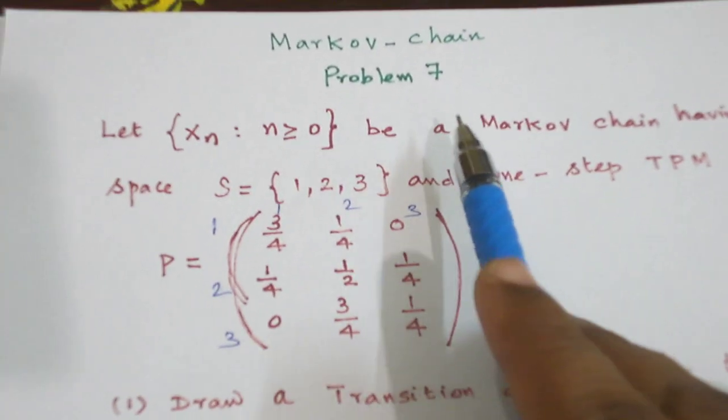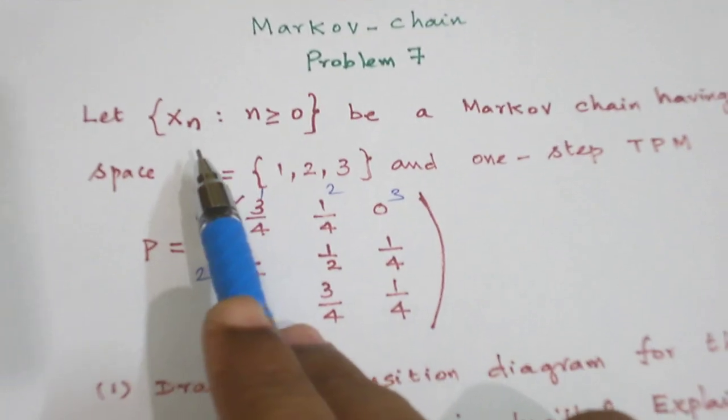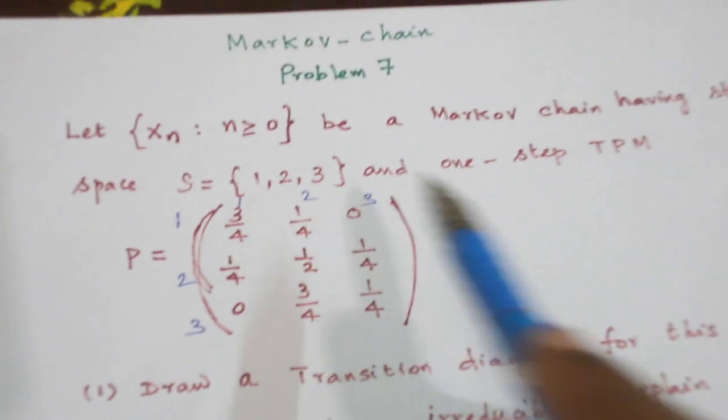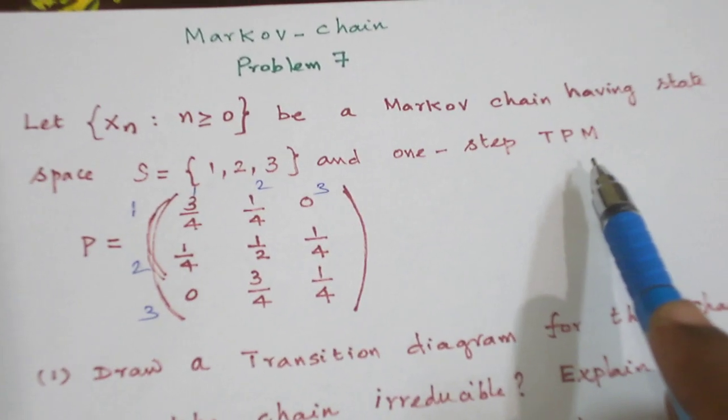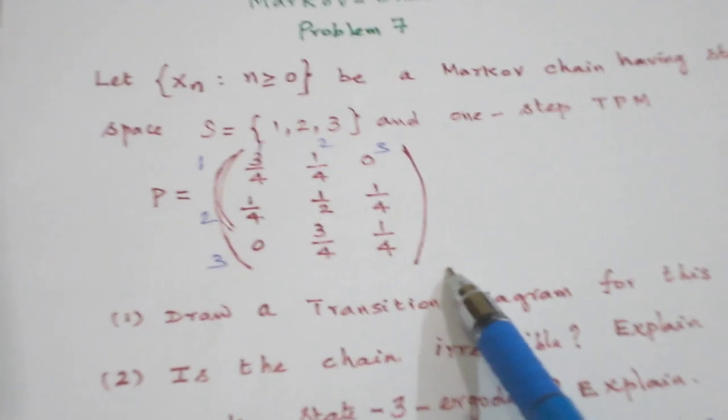Today let us see a problem from Markov chain. We are given a Markov chain Xn with three states and naturally its transition probability matrix is going to be a 3 by 3 matrix that is also given.